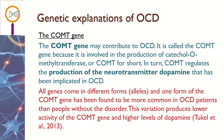First off, the genetic explanation. There are two genes linked to OCD. The first one is the COMT gene, which is linked with the production of the neurotransmitter dopamine. It's found that in people with OCD, they have a higher level of dopamine — excessive dopamine is being produced in the brain when it shouldn't be that high.